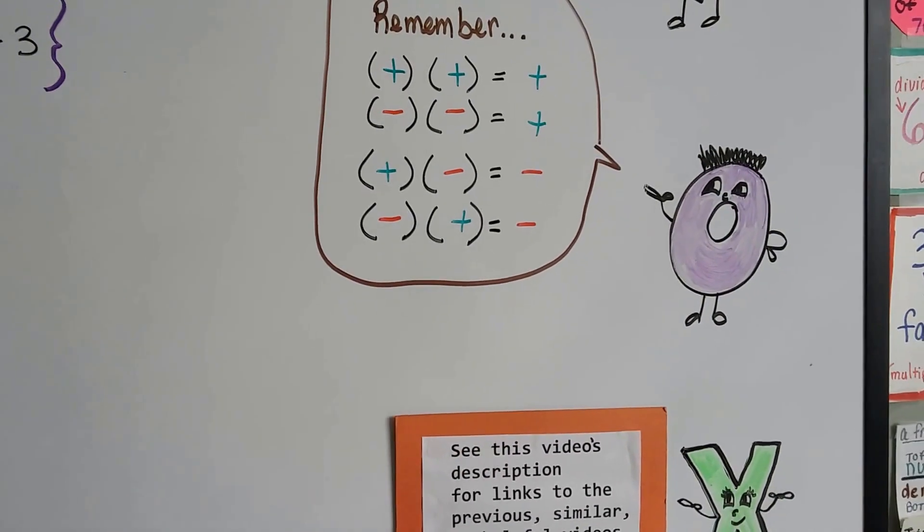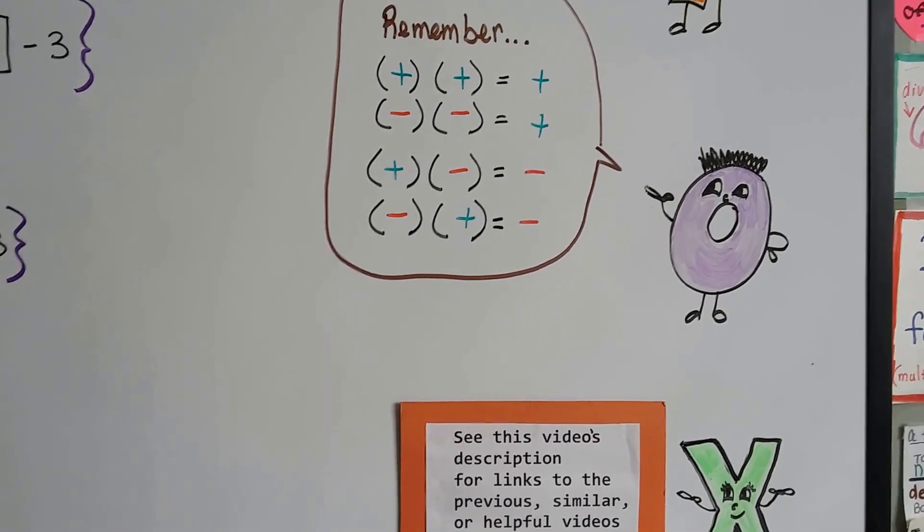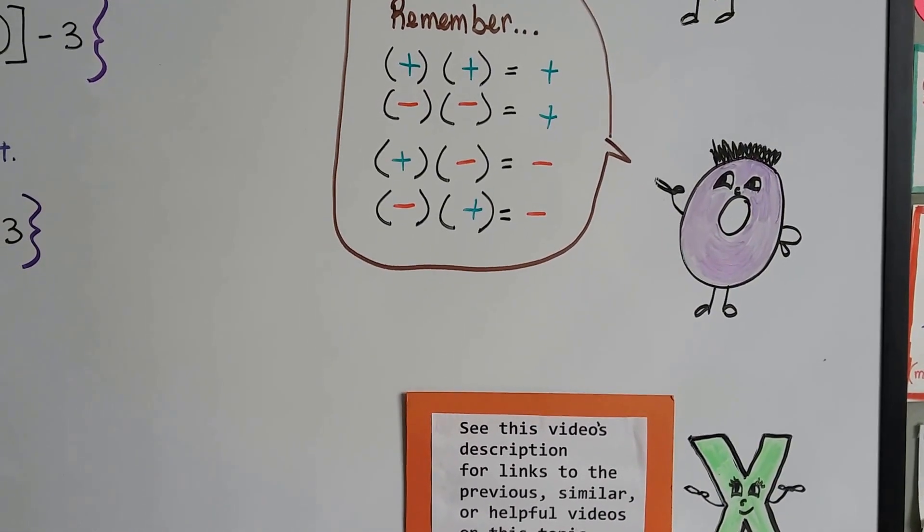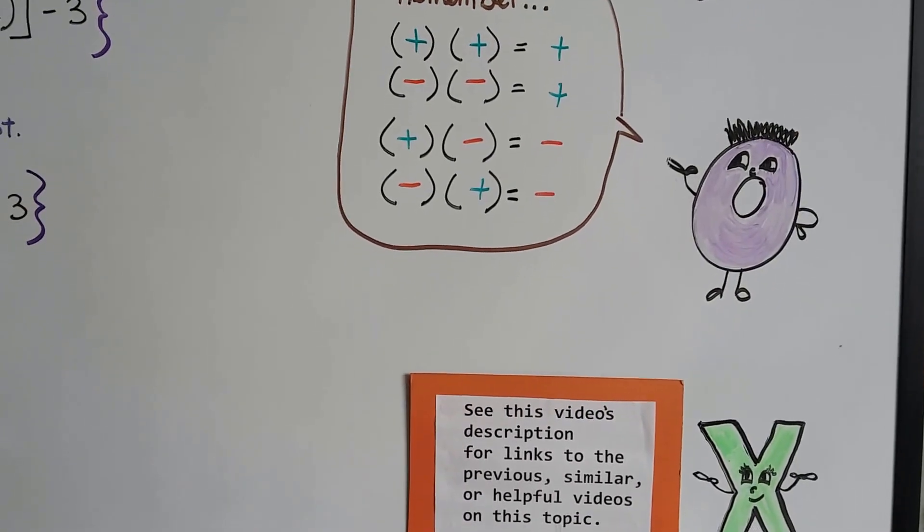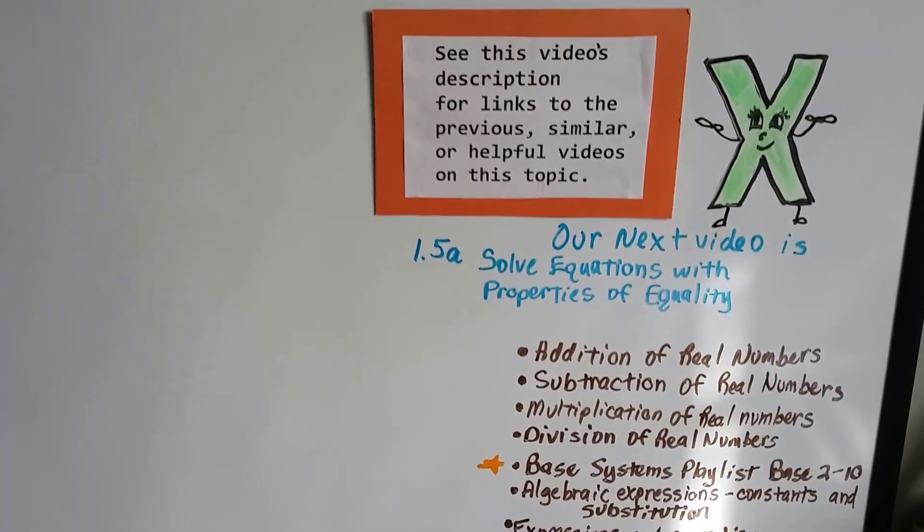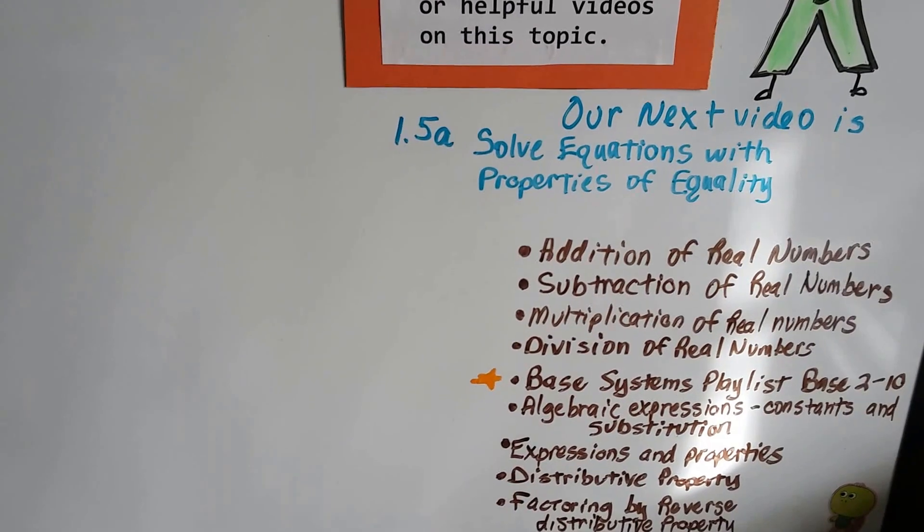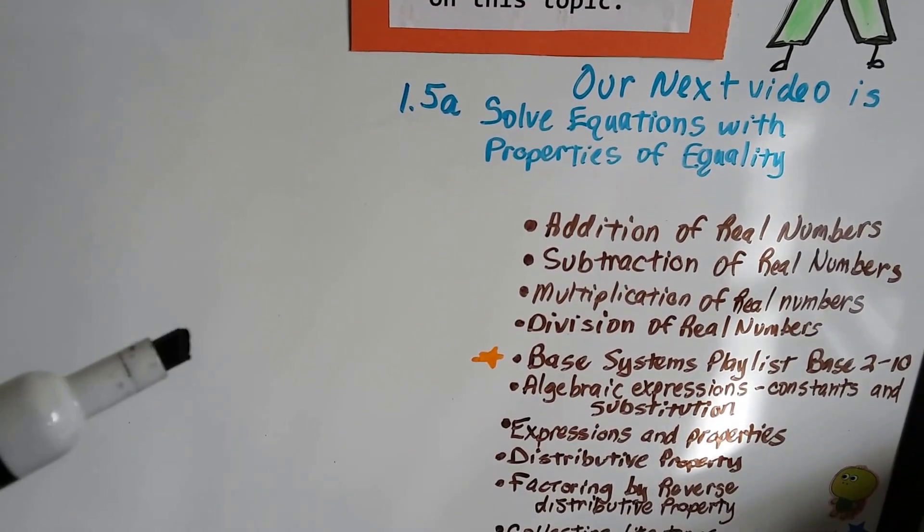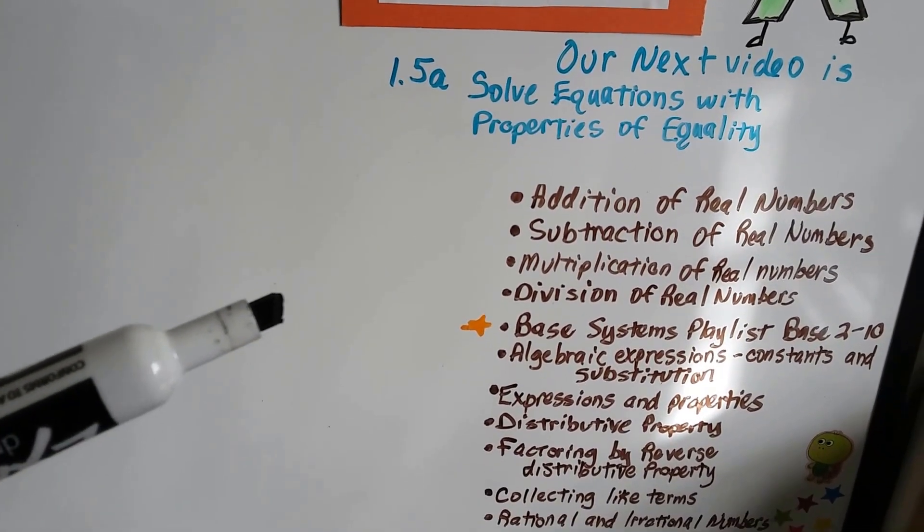You should have that inside the cover of your spiral or somewhere as a note so you can flip to it real quick. And our next video is 1.5a, and we're going to talk about how to solve equations using the properties of equality.